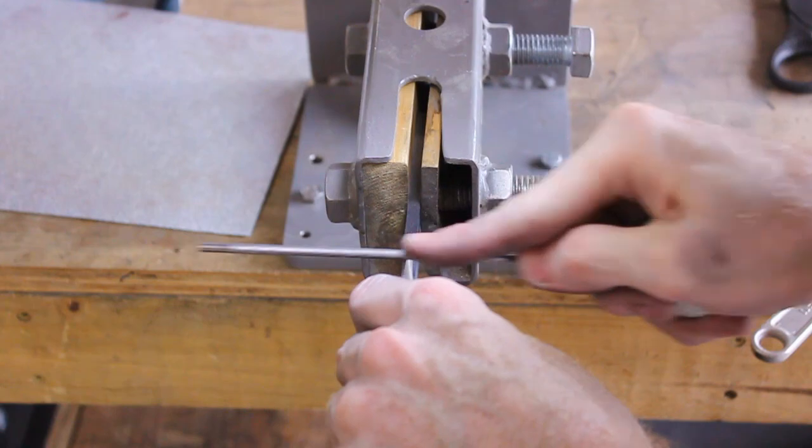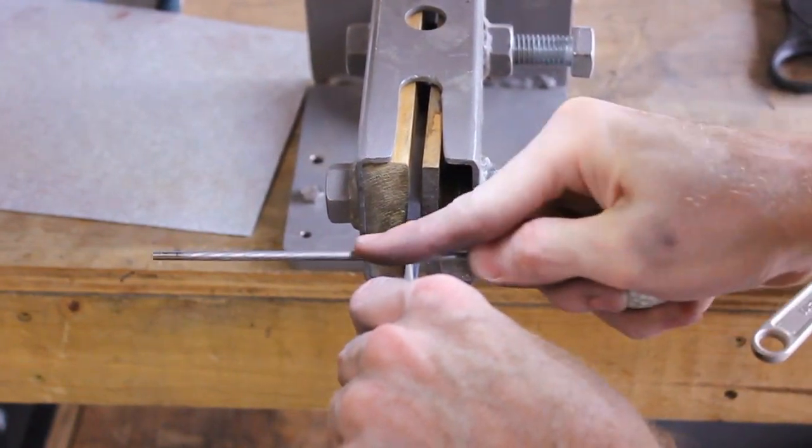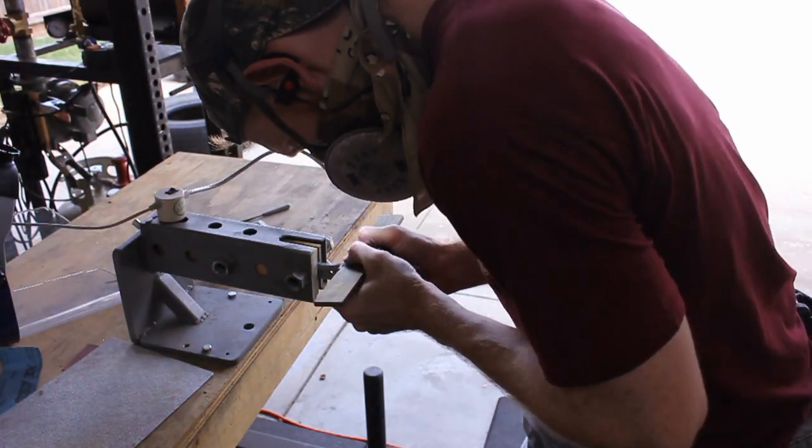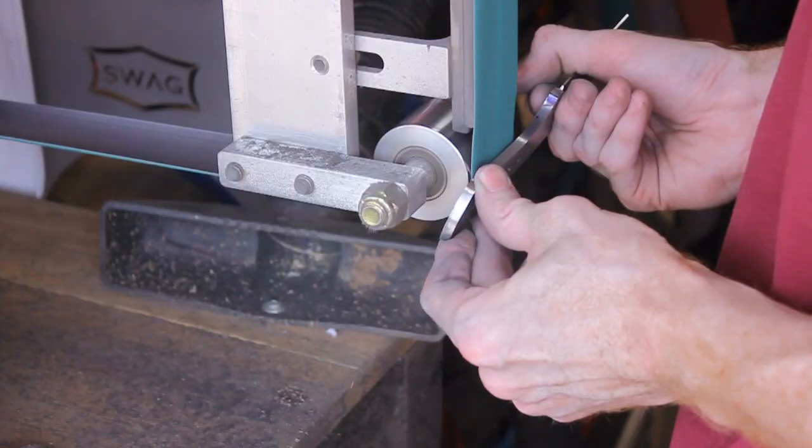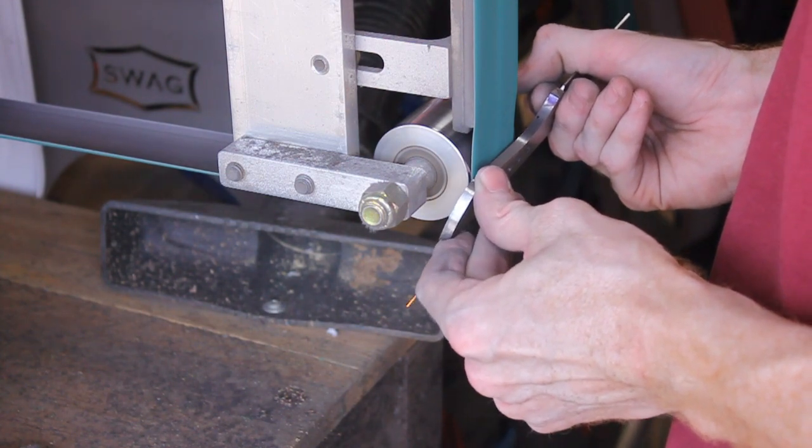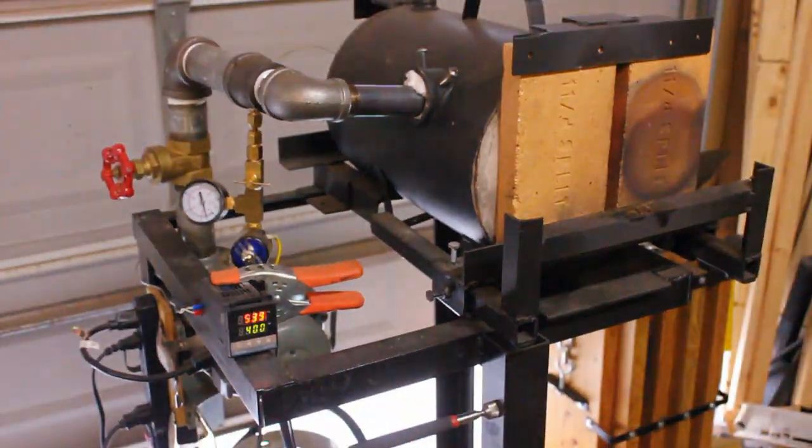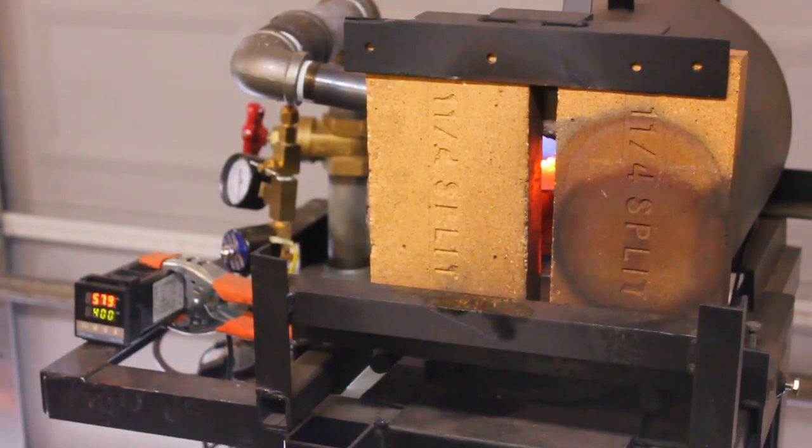Pre-heat treat, I go ahead and file in my Spanish notch or sharpening notch. This makes it way easier for me to sharpen the blades. It gives you a starting spot so you don't gum up your plunge lines.